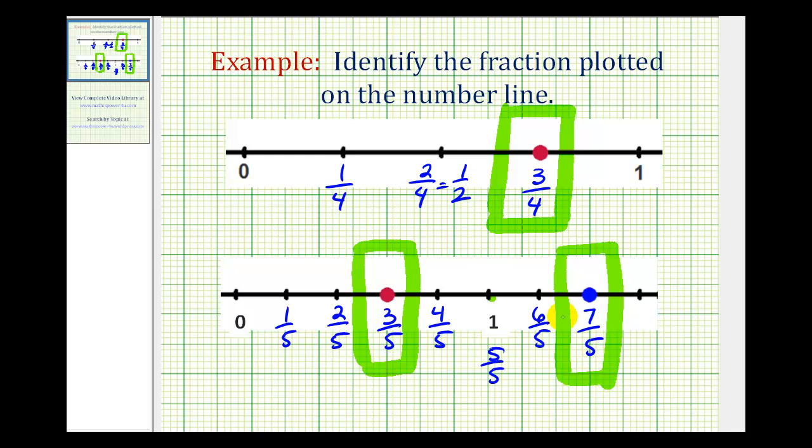Now it is true that seven-fifths is an improper fraction. We could have written this as one and, this would be one-fifth and two-fifths, so one and two-fifths. But normally when we're identifying fractions on the number line, we haven't learned about mixed numbers yet. So seven-fifths would be the fraction plotted on the number line with this blue point. And one and two-fifths would be the mixed number plotted on the number line with this blue point.